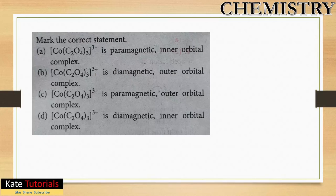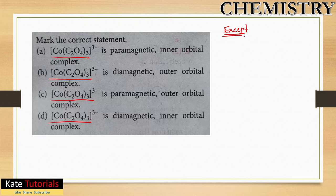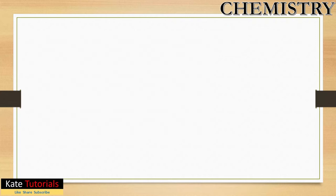This is an important question asked in JEE involving an exception in inorganic chemistry. The question is about a cobalt oxalate complex. All four options given in the question feature the same complex. If we discuss this complex thoroughly, we can determine whether it is paramagnetic or diamagnetic, and whether it is an inner orbital or outer orbital complex.